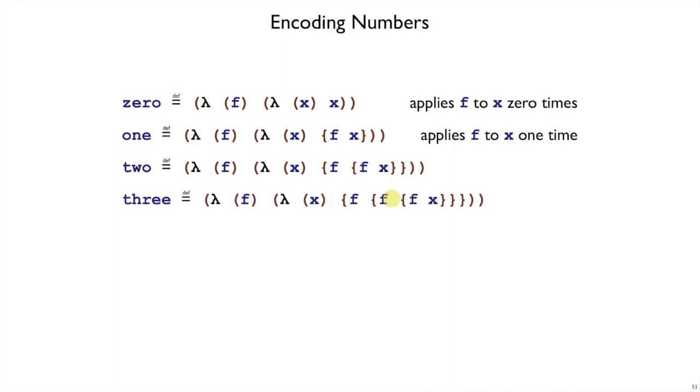3 does that three times. In general, I'm going to represent a number n by always—every number will have the pattern lambda f, lambda x, and it'll apply that f, that function f, n times to x. So clearly, I have a different encoding for every non-negative integer.